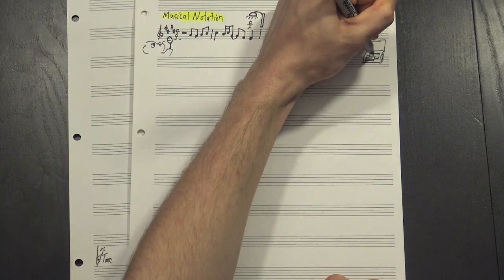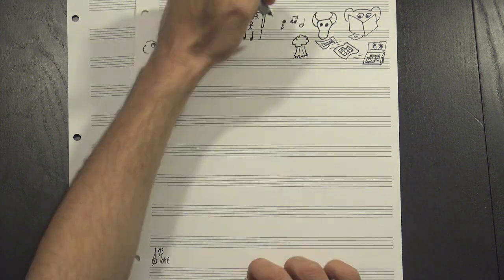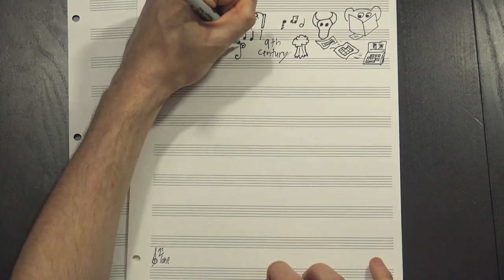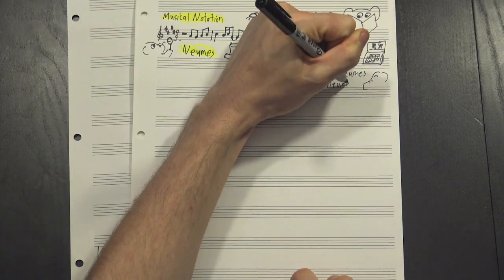Well, to answer that, we're gonna have to go back in time, like way back. Western notation can trace its roots back to roughly the 9th century, when music began written down with what are called neumes, a word I am very excited that I get to say a bunch of times.